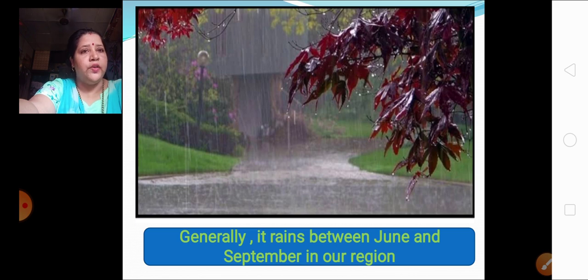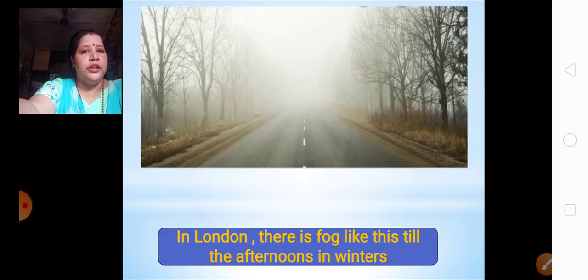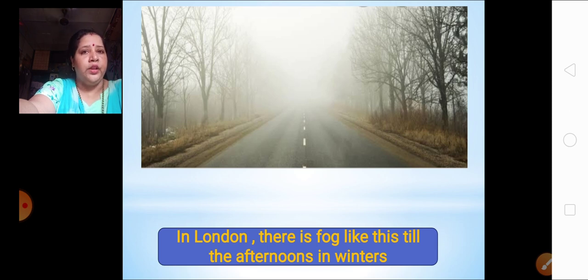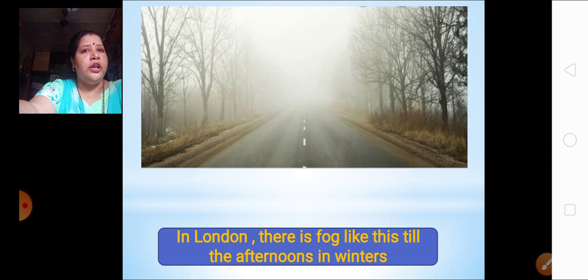This next picture is showing you London, where there is fog like this till the afternoons in winters. Such type of fog can be found in London till the afternoons. Fog is made because of the hot and cold winds. The question arises: why don't we have fog like this? Even though we have winters, why are we not having fog like this — and why are we not having fog till the afternoon in our places?